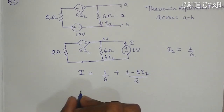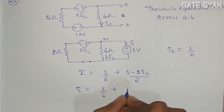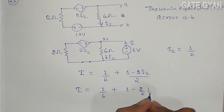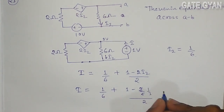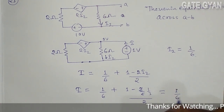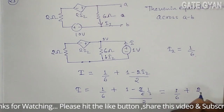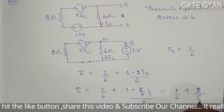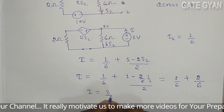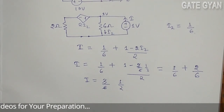So I will become equal to 1/6 plus (1 minus 2/6) divided by 2, which is 1/3 divided by 2. So that gives us 1/6 plus (3 minus 1 plus 2) over (3 times 2), which is 2/6. This implies that I is going to be 3/6, that is 1/2. So to get RTH...